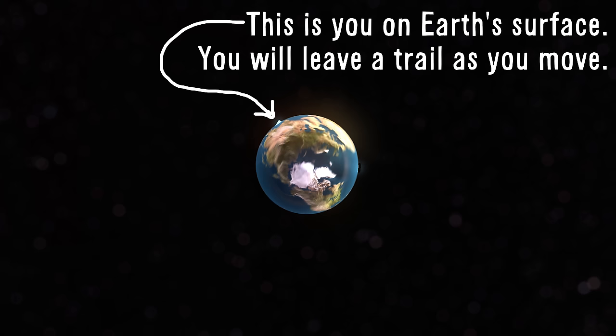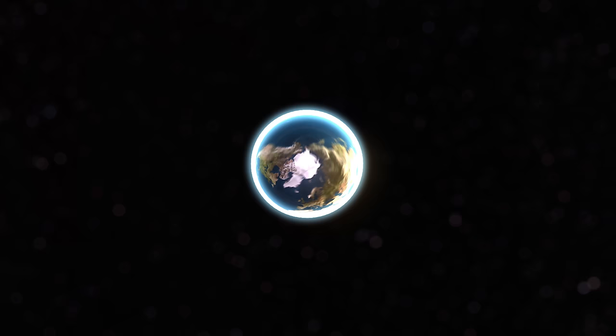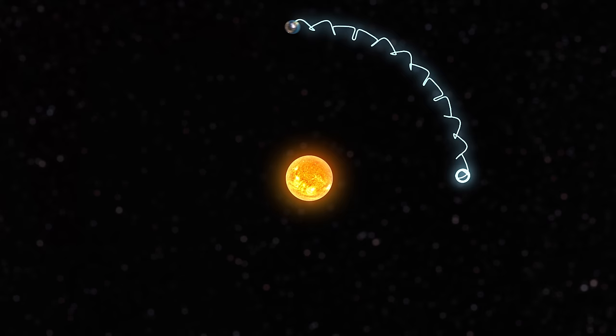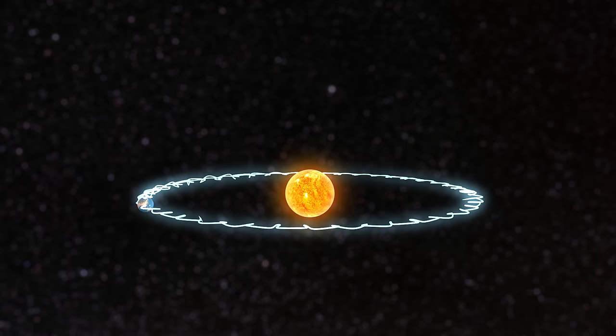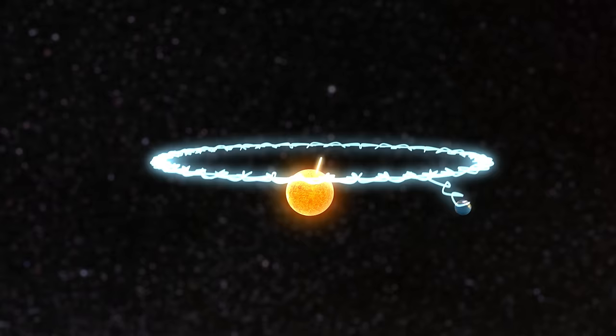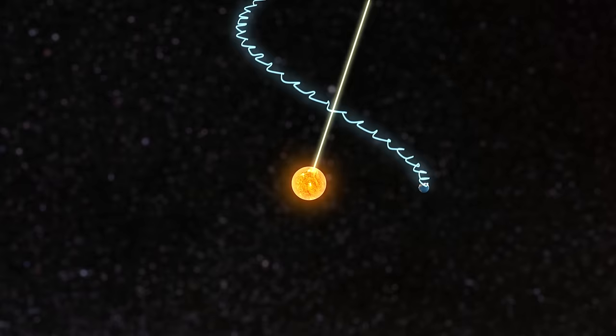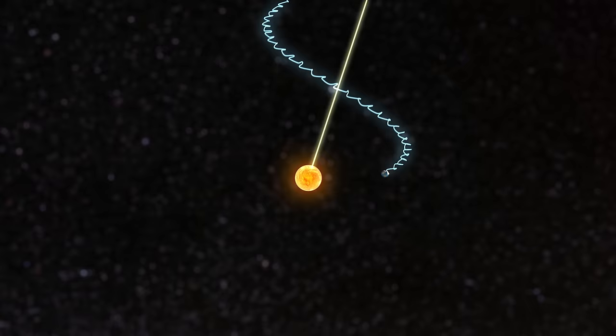Looking from above the North Pole, the equator spins counterclockwise at about 1670 kilometers per hour. Relative to the Sun, Earth orbits counterclockwise at 108,000 kilometers per hour along a path tilted 23.4 degrees to its spin. Within our local neighborhood of stars, our entire solar system is drifting 70,000 kilometers per hour, roughly in the direction of the bright star Vega in the constellation of Lyra.